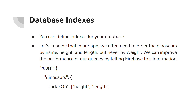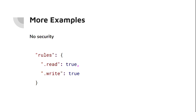The last type of rule is indexes. You can define indexes for your database to improve query performance. For example, imagine in your app you need to order dinosaurs by name, height, and length but not by weight. You can tell Firebase this information and include it in your security rules. In the rules you have 'dinosaurs' and .indexOn with height and length, which enforces the index in your database.